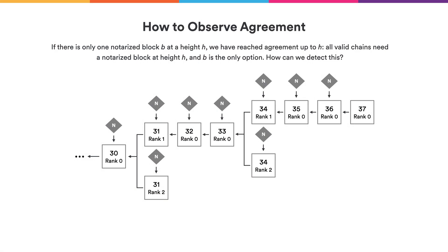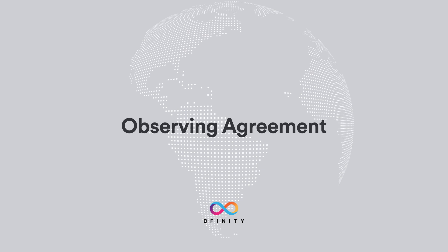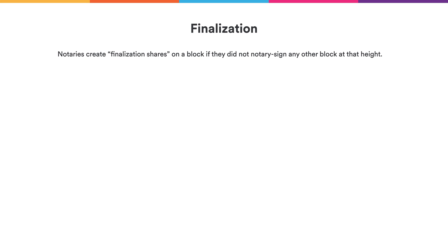If there is only one notarized block in a round, we have actually already reached agreement, because a valid chain must consist of notarized blocks at every round. The challenge is knowing when we've reached agreement. We have a separate asynchronous finalization process that helps us detect this. Notaries create notarization shares until one block is fully notarized, at which point they move on to the next round. We also have notaries share information about how many blocks they signed, which helps us reach agreement.